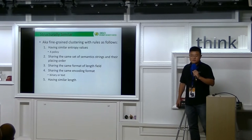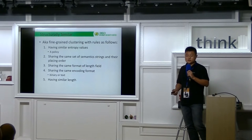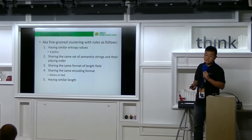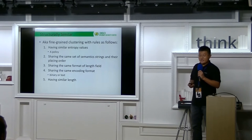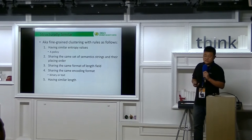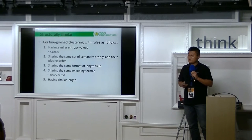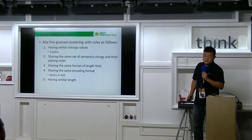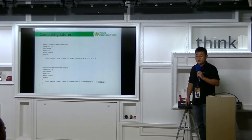This step is also called fine-grained clustering. It is used to find the structurally similar registers. Two registers are considered structurally similar if and only if they have similar entropy values and they share the same set of semantic strings under their placing order, and they share the same format of length field, and they share the same encoding format, and they have similar length values.